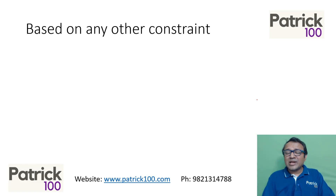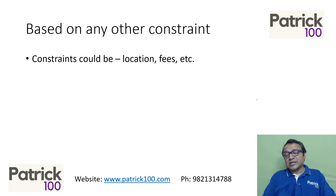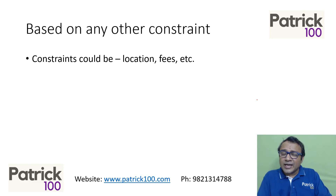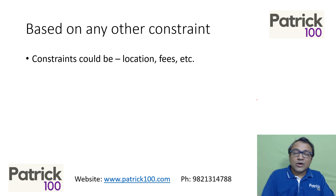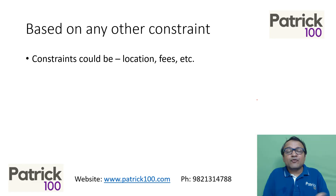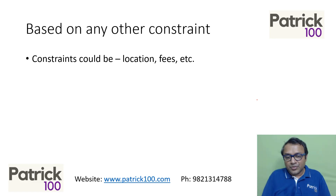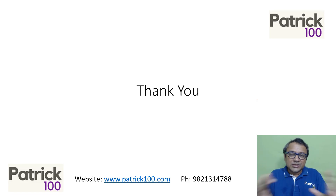You can also apply constraints based on other factors — it could be location, for example, wanting to be only in Mumbai, or fees being too high and not being able to afford them. Look at the constraints you have and accordingly decide on the colleges you want to apply to. So I've given you a few parameters on which you can decide on the colleges. Do a little bit of research based on these constraints and then work on that. I hope this is clear. Thank you.